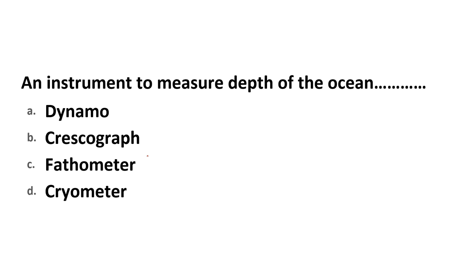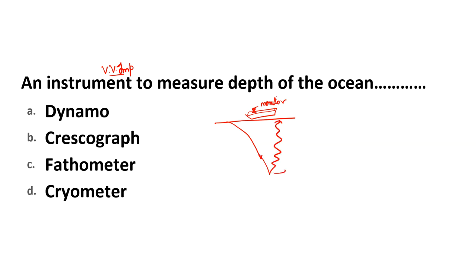An instrument used to measure the depth of the ocean — a very important question, repeated across many different exams. To measure ocean depth from the surface, a monitor-like instrument is installed on boats or ships that produces sound waves. The sound bounces off the ocean floor and returns, and based on the time taken, depth is calculated. The device is called a Fathometer — C is the correct answer.